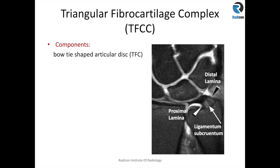Here is an example of a TFC disc, which is a bow tie-shaped structure. It has a proximal lamina which inserts onto the ulnar, and it has a distal lamina which almost inserts onto the ulnar styloid process. In between, this area is called ligamentum subcruentum and it is of slightly intermediate to high signal intensity, so please don't confuse it with a tear.